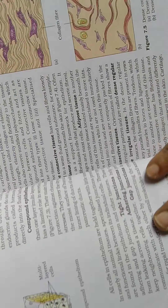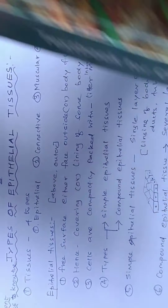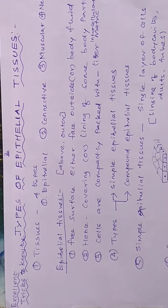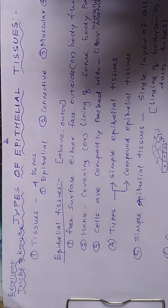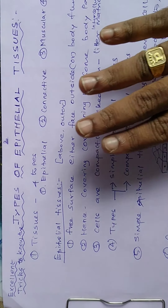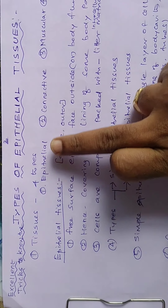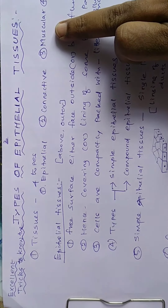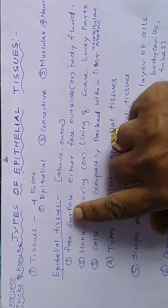We will cover squamous, cuboidal, columnar, ciliated, and glandular epithelial tissue in a simple, easy-to-recall and easy-to-understand way. Any questions after completing this video section, you can attend any type of question asked in the NEET exam. First, let us go to what is epithelial tissue. Generally, tissues are four types: epithelial tissue, connective tissue, muscular tissue, and neural tissue.